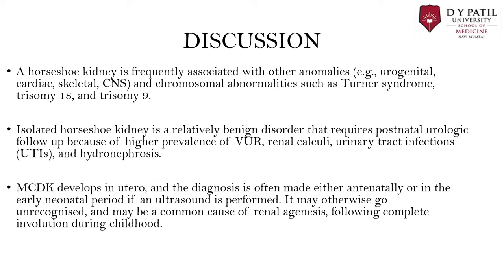Horseshoe kidney is frequently associated with other anomalies and chromosomal abnormalities such as Turner syndrome, Trisomy 18, and Trisomy 9. Isolated horseshoe kidney is a relatively benign disorder requiring postnatal urologic follow-up due to higher prevalence of vesicoureteral reflux, renal calculi, urinary tract infection, and hydronephrosis. Multicystic dysplastic kidney develops in utero; diagnosis is often made antenatally or in the early neonatal period, and it may be a common cause of renal agenesis following complete involution during childhood.